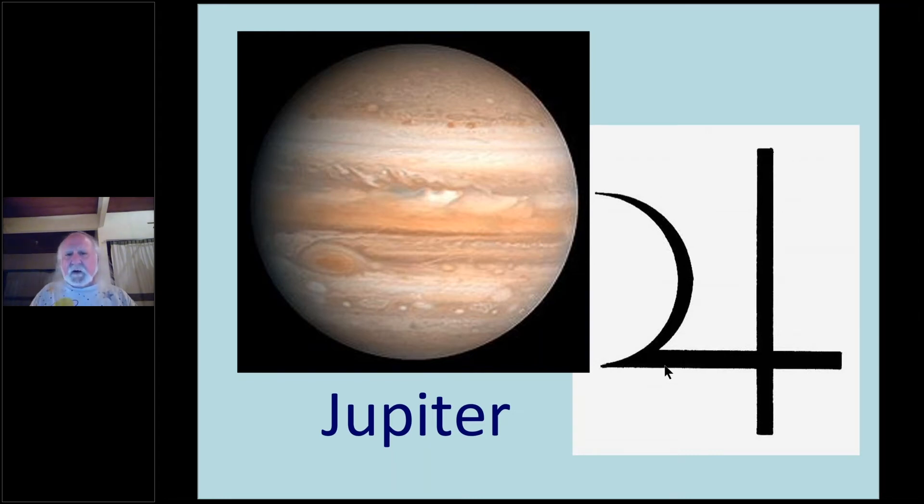Jupiter, as you probably know, is the only planet that emits more energy than it receives, although the energy that it emits is not in the visible spectrum. The energy that it emits is in the radio frequency and x-ray spectrum. That would technically make Jupiter and the sun a binary star system.